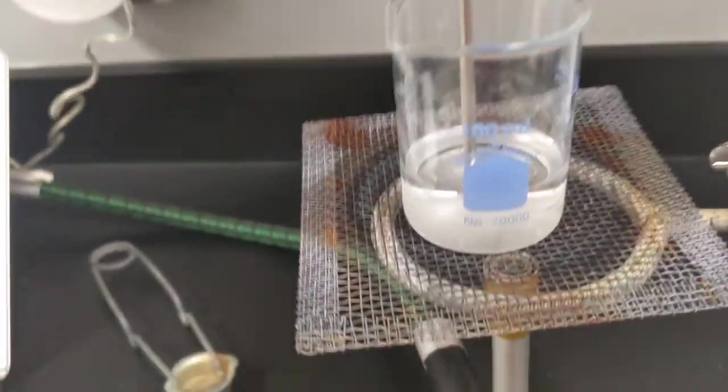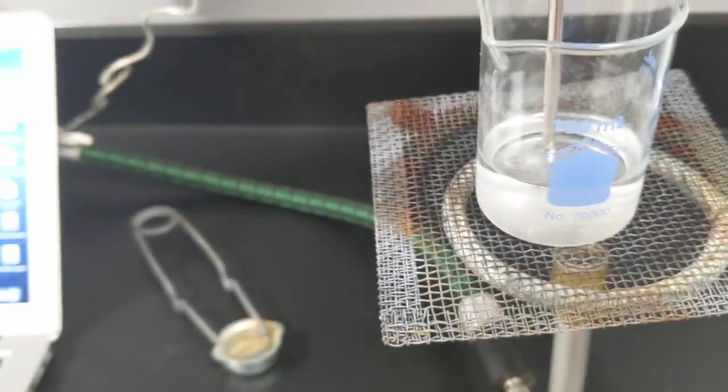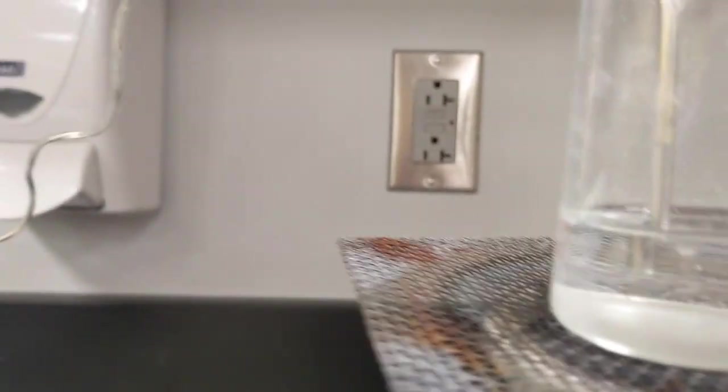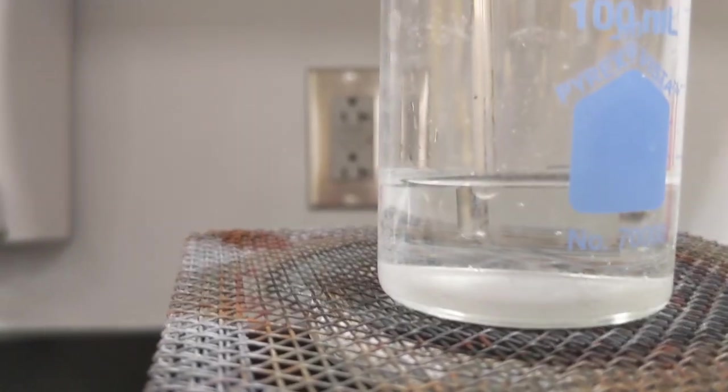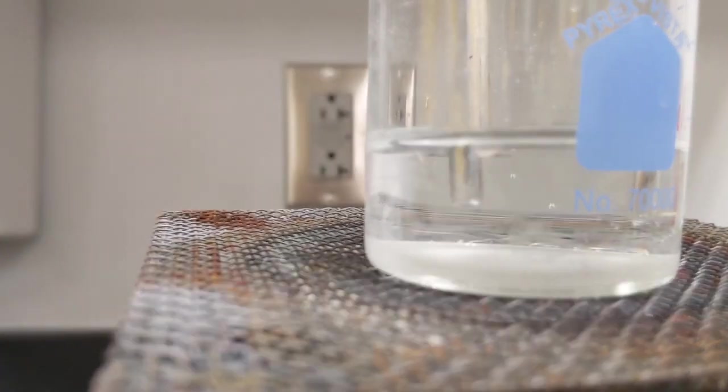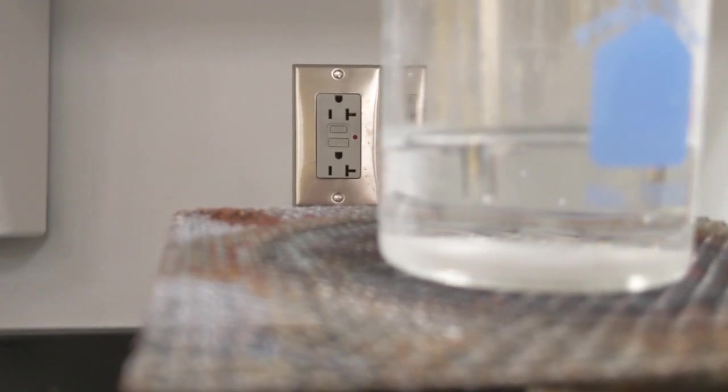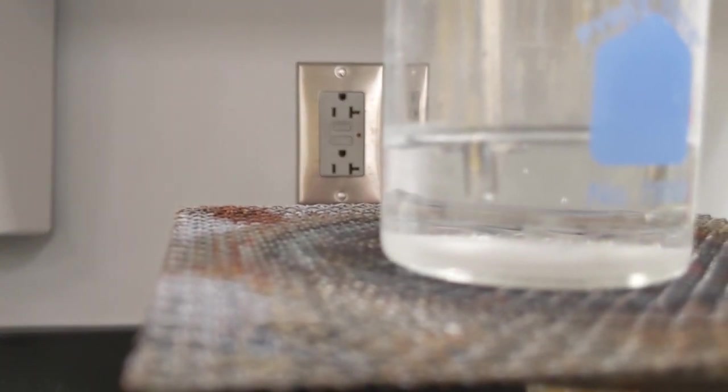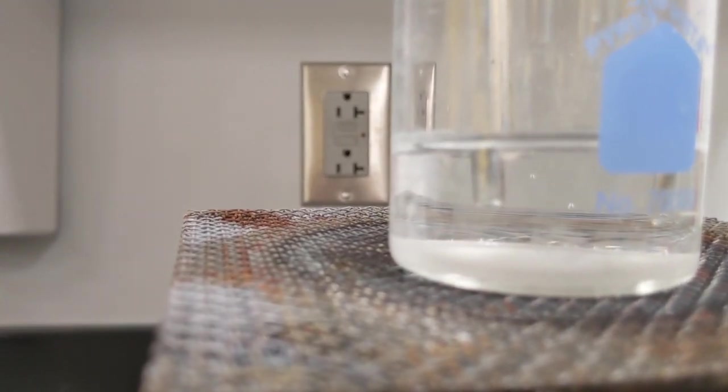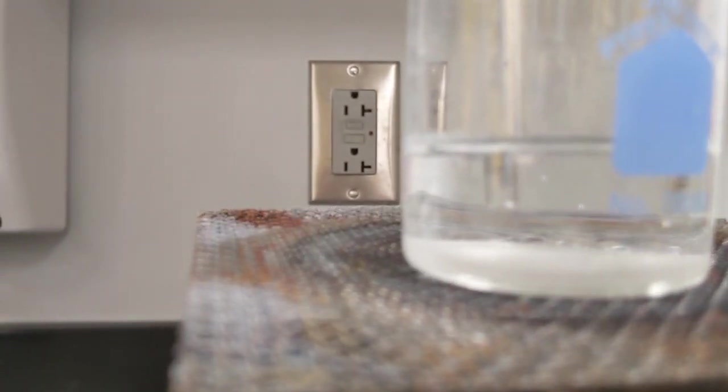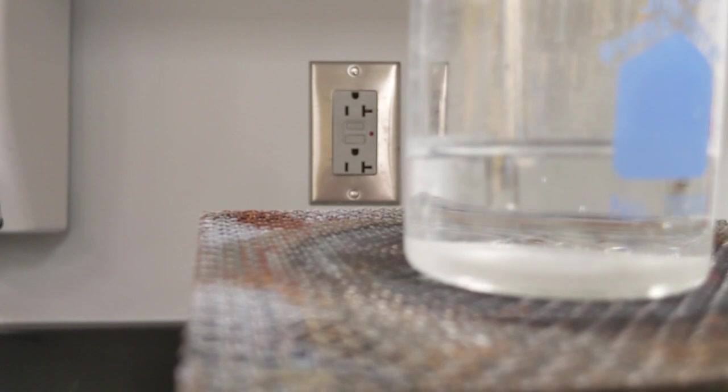We have the ring stand. We have this wire cover just to get the beaker something to sit on. One thing to point out is that the thermometer itself is sitting in the water, but it's not touching the glass. So we're only going to measure the temperature of the water by doing this. We're not going to measure temperature of the glass or the metal or anything else. So this is our setup. And then when we get ready to start, once we get everything lit up, we'll show you how we start this up.